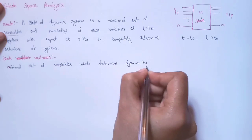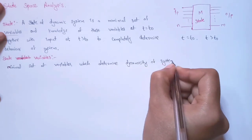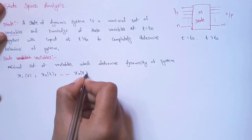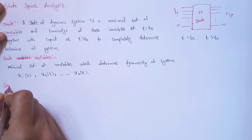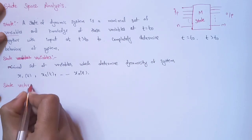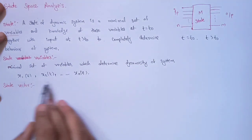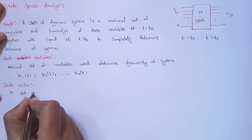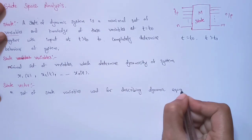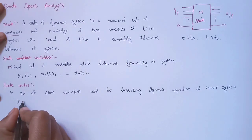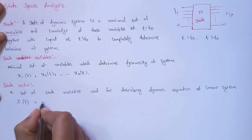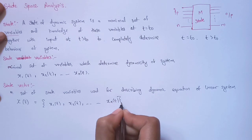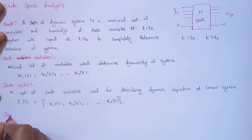These state variables are denoted by x1, x2, and so on. Now a term comes: state vector. The collection of these state variables is nothing but a state vector. It is denoted by x(t) and it contains x1(t), x2(t), and so on up to xn(t).